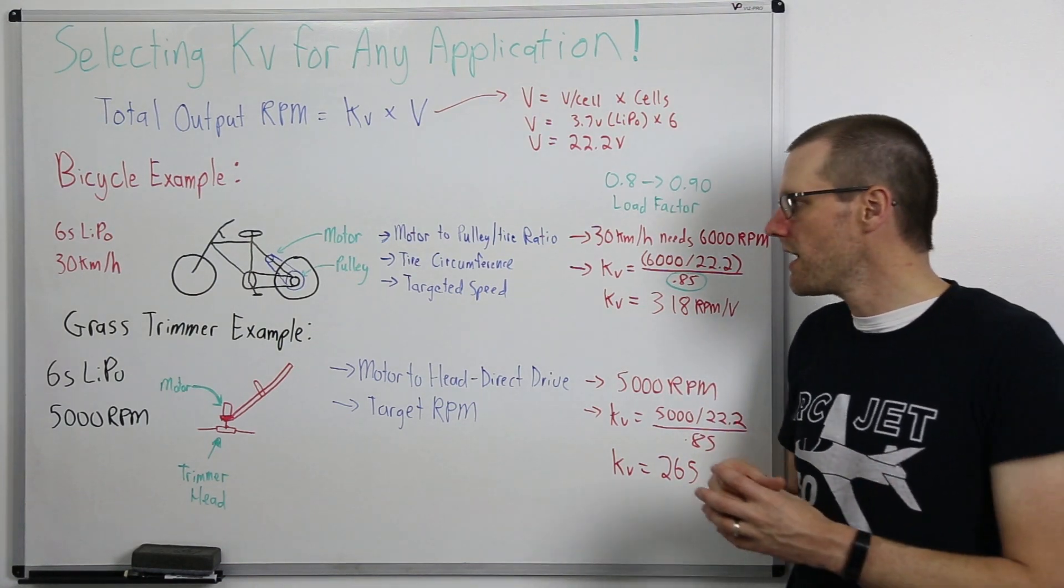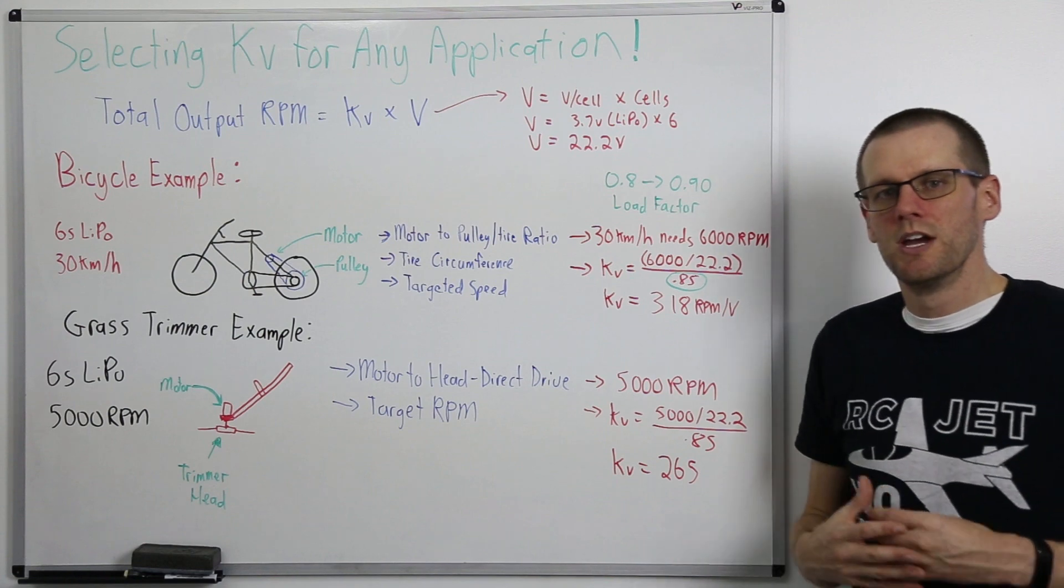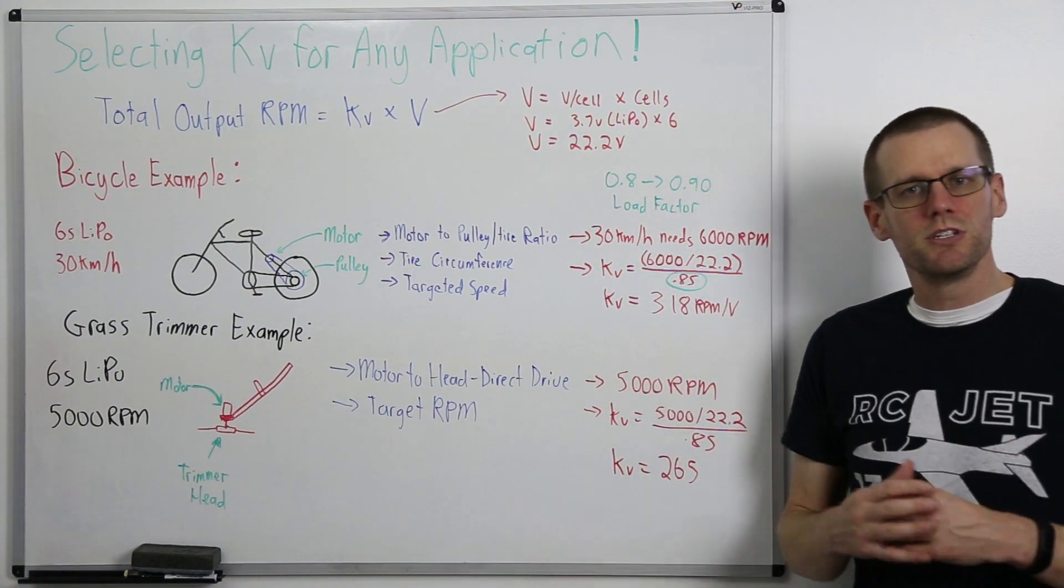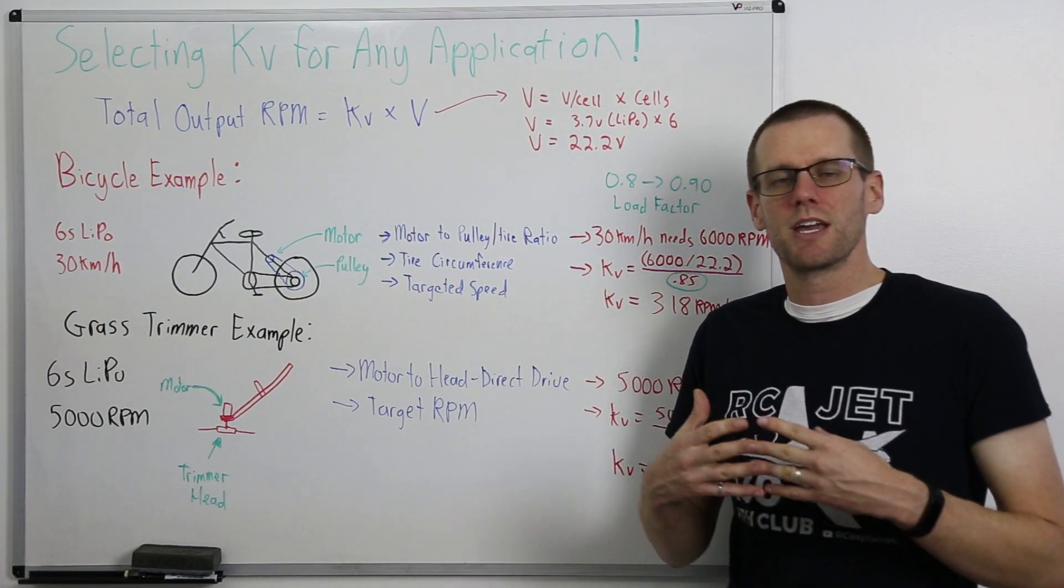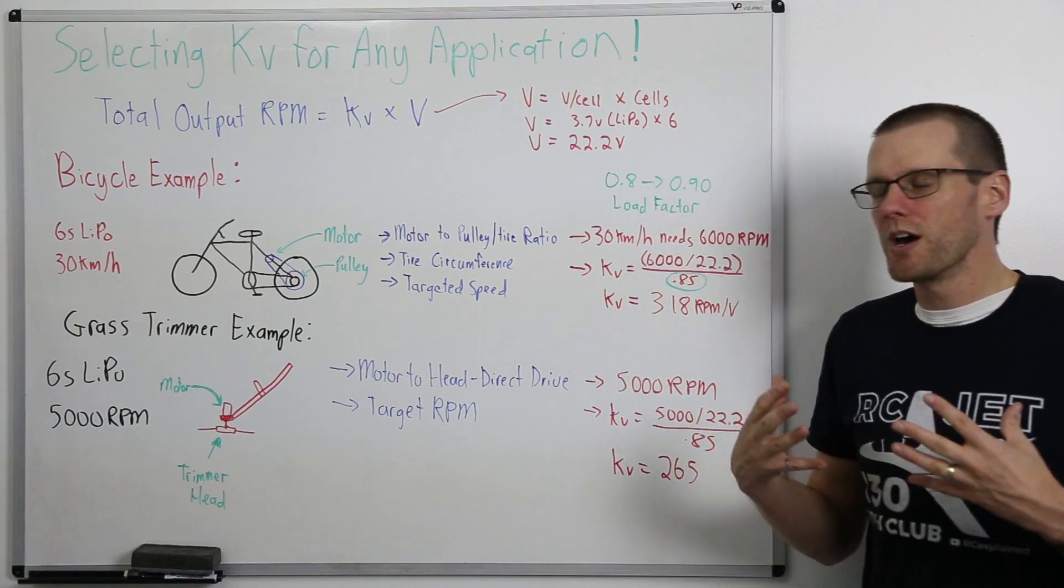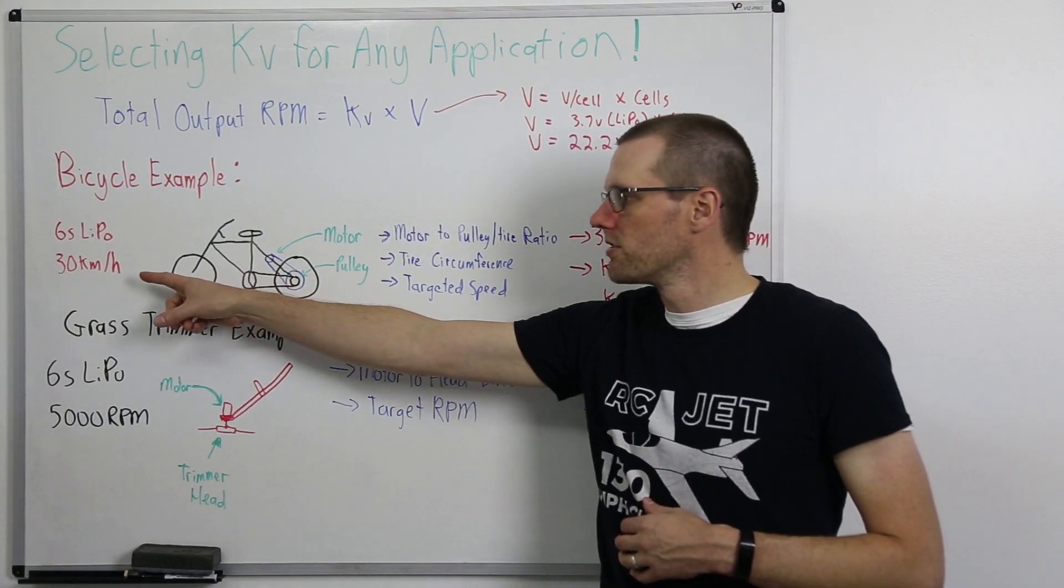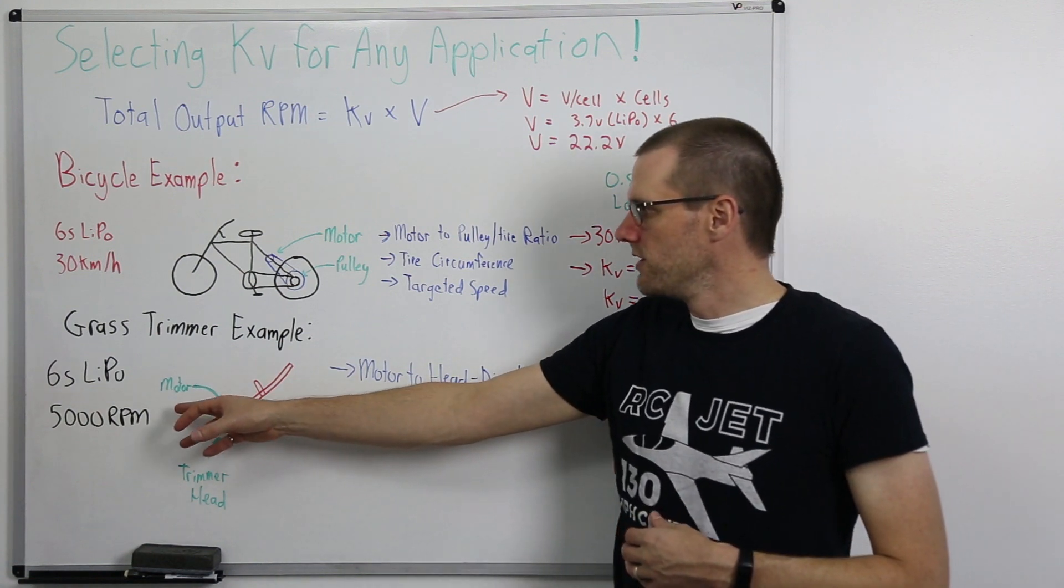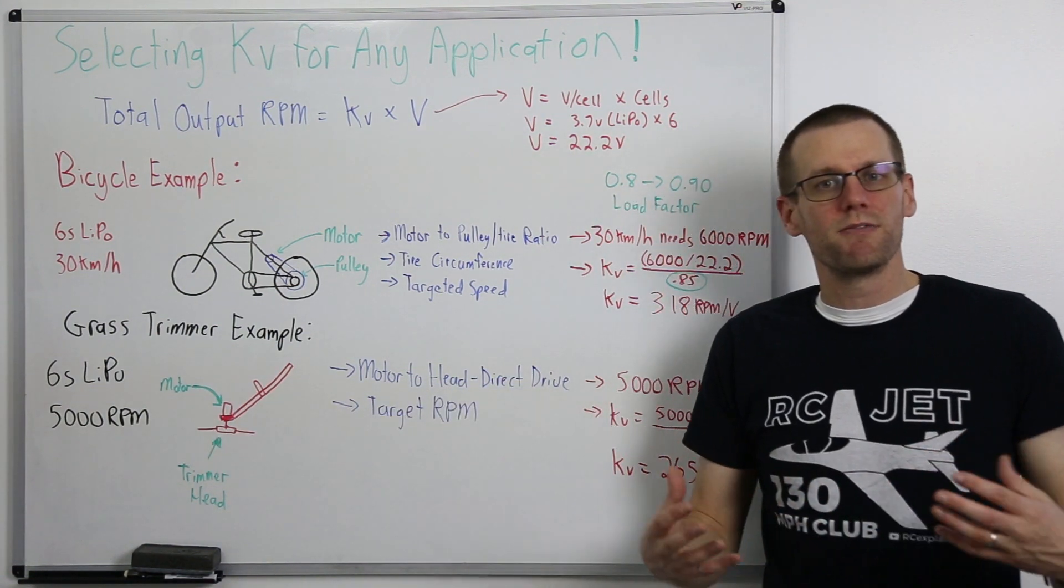So that is essentially how this works when it comes to determining the kV for any application. You first need to know what is the target speed because kV is relating output rpm from your motor. Whenever you know what kind of target speed whether it be a vehicle 30 kilometers an hour it's got to be realistic of course and or your grass trimmer requiring about 5,000 rpm.